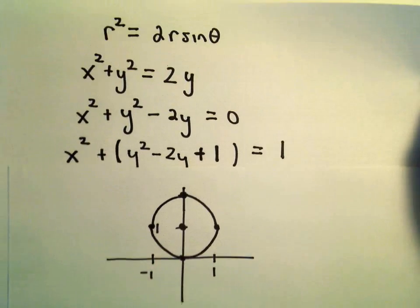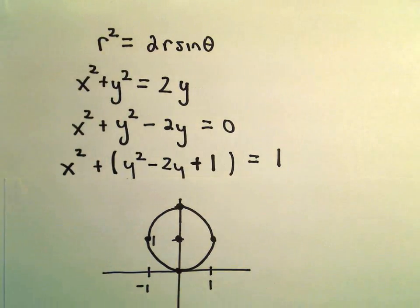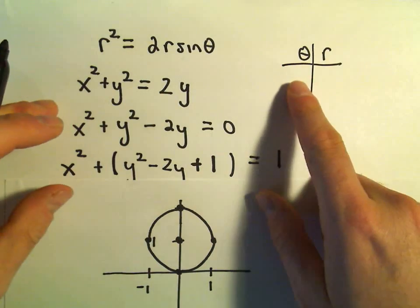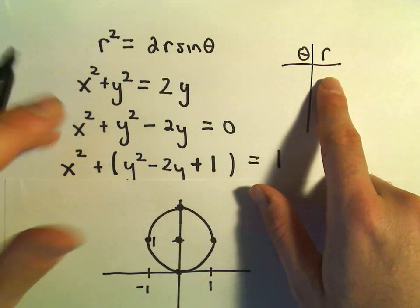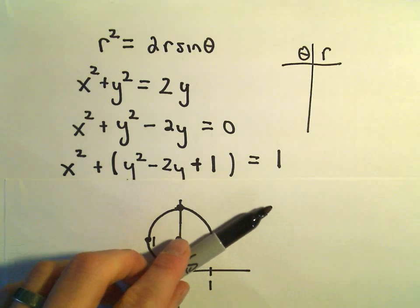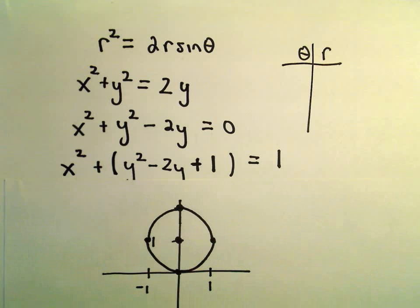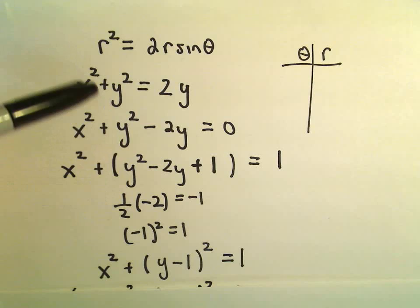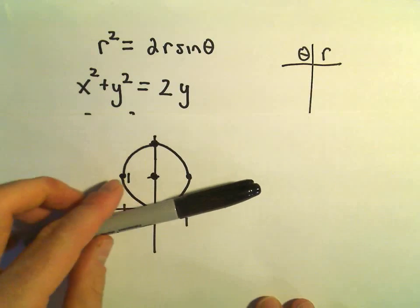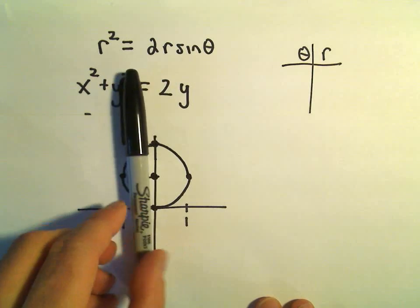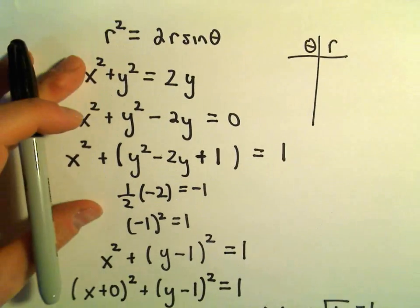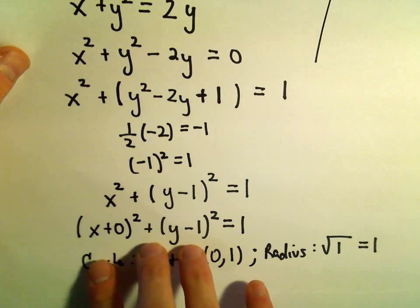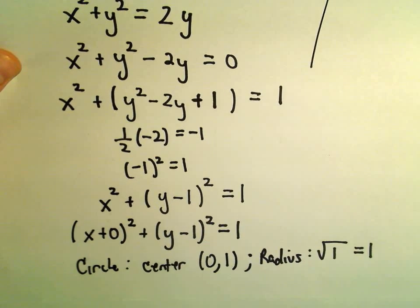You could always plot points — picking values for theta, calculating r, and then plotting points that way. But a lot of times a more efficient, exact way is to turn it back into rectangular coordinates. Maybe by plotting points I'd think it looks like a circle if I'm making a good graph, but once I turn it into rectangular coordinates and see the equation, I'm positive that I am, in fact, getting a circle.